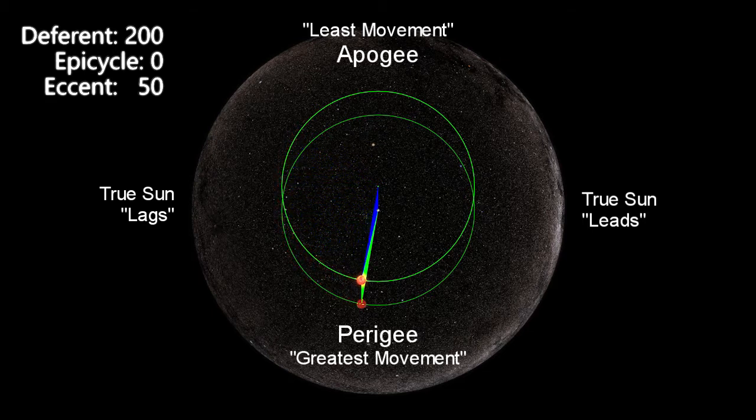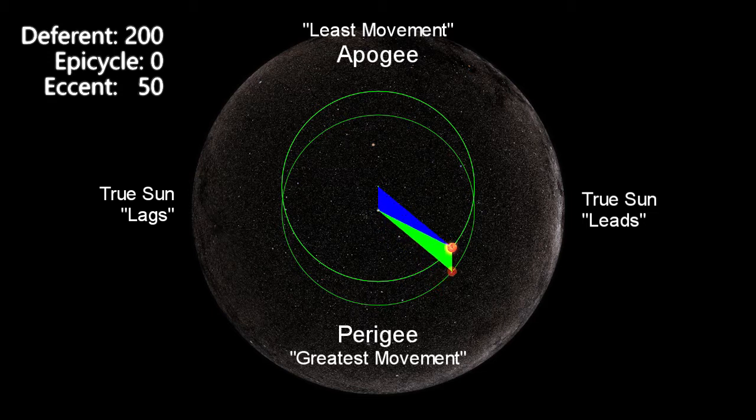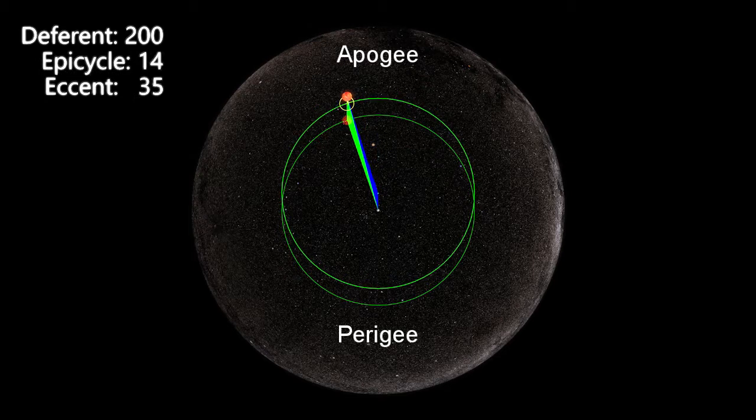This same behaviour can also be modelled by a concentric circle, or deferent, that carries a smaller circle, the epicycle, around its circumference.